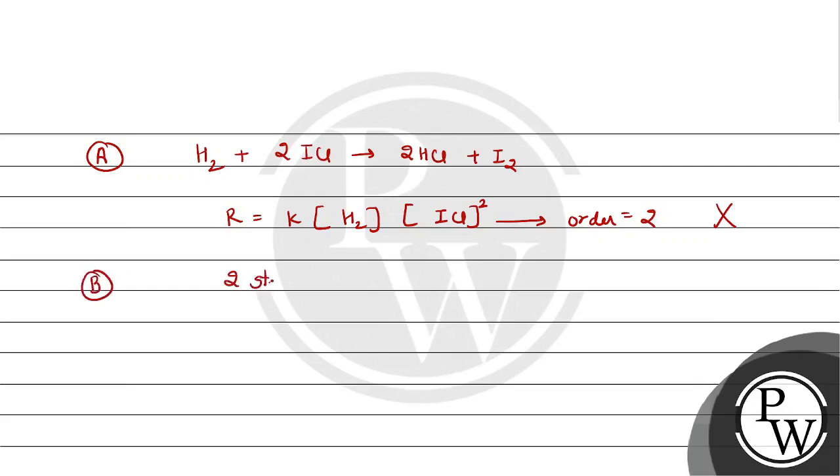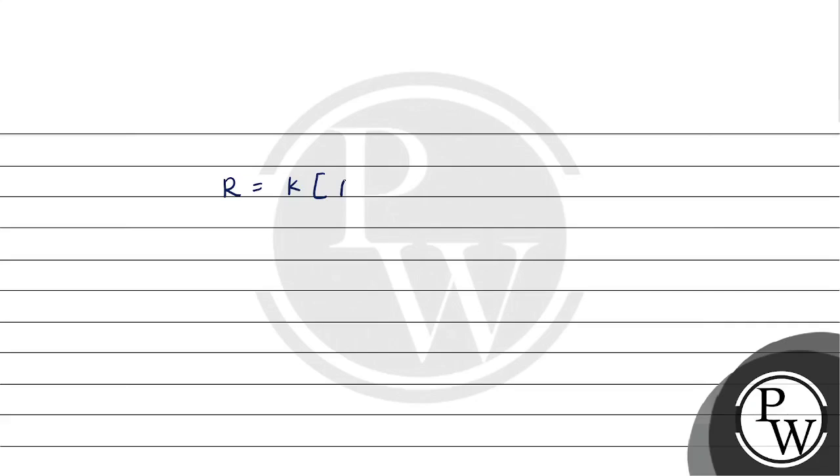In mechanism B, there are two steps. One is fast step and one is slow step. The first step is slow step which is the rate determining step. The rate law is R equals K into concentration of H2 into concentration of ICl. Here H2 and ICl have order 1. And the original rate law given is the same, that is R equals K into H2 raised to power 1 into ICl raised to power 1. This means that mechanism B is correct.